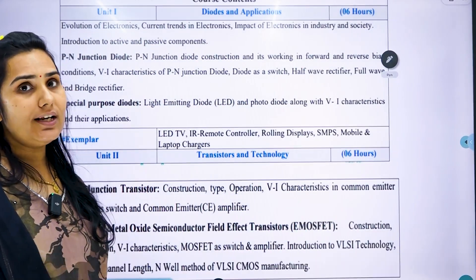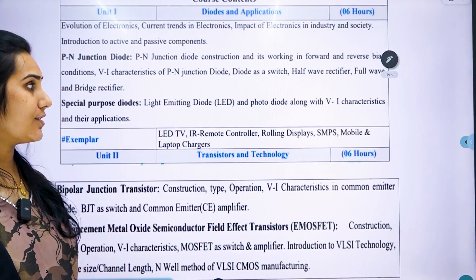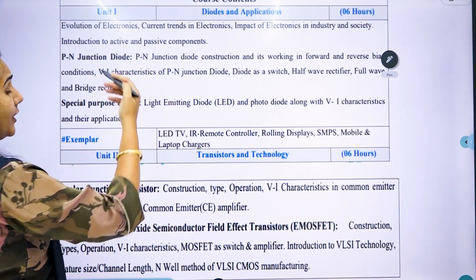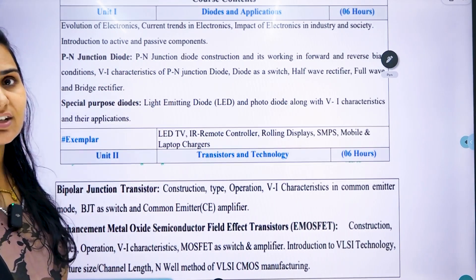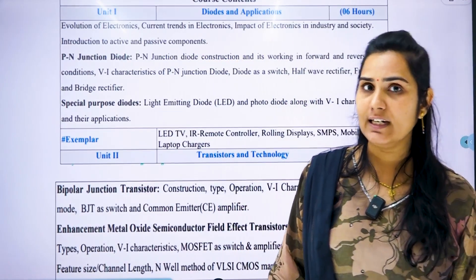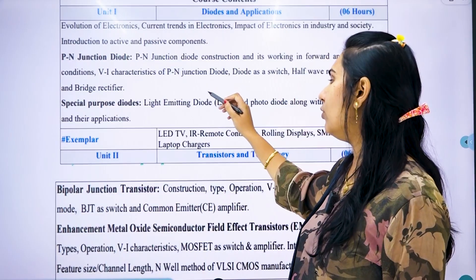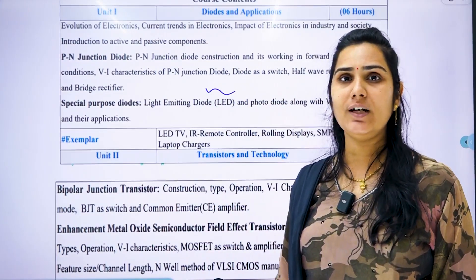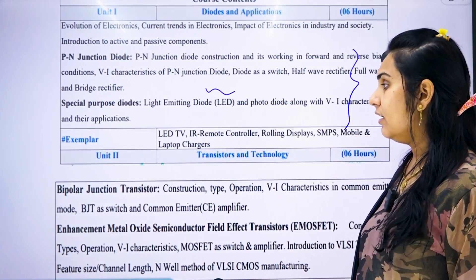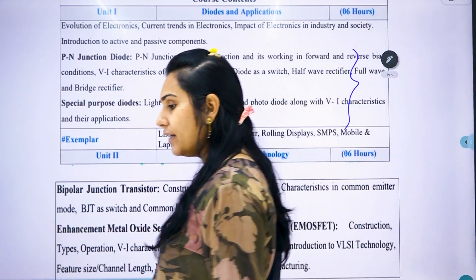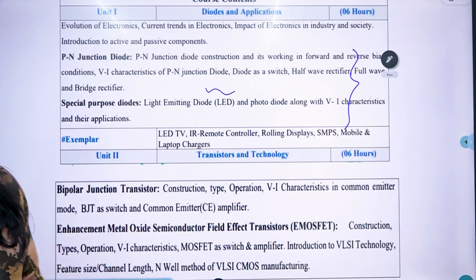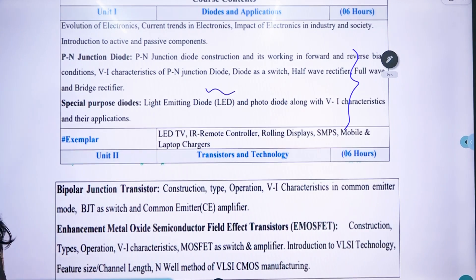This is the overall syllabus of this subject. There are a total of 6 chapters. In the first chapter, we are going to discuss the importance of electronics in the industry and how we can achieve a particular objective in the electronic industry domain by learning those components. In unit number 2, we will discuss how we can combine active devices and passive devices to achieve a particular application.